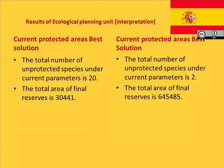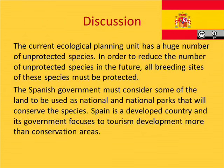The same relationship can be seen for the ecological niche planning unit. For the current protected areas of the ecological planning unit, the total number of unprotected species is all 20 endemic species. For the future protected areas of the ecological planning unit, the total number of unprotected species is 2. There is also an extremely large difference in the final areas of the reserves: the future ecological planning unit has 645,485 square kilometers, whereas the current protected areas have only 30,441 square kilometers.